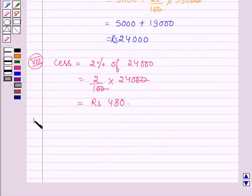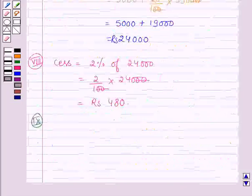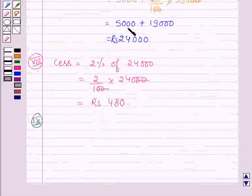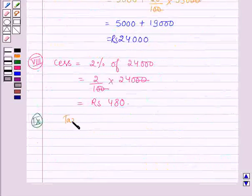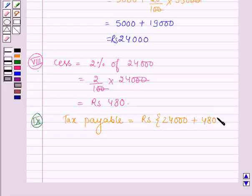The next step is to add the amounts obtained in steps 7 and 8. Since step 7 was not applicable, we add the amount from step 8 to the amount from step 6 to get the total tax payable. So the tax payable is equal to rupees 24,000 plus rupees 480, which is equal to rupees 24,480.